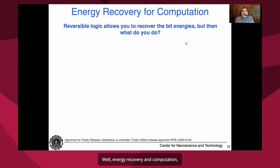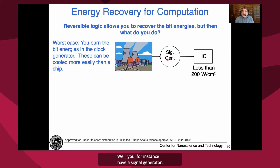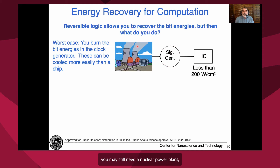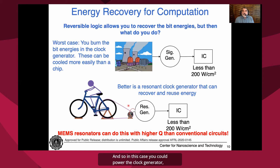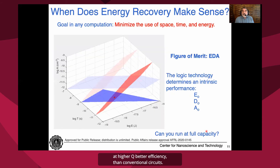Energy recovery and computation can be done with reversible logic — you recover the bit energies, and then what do you do with them? You could have a signal generator that puts bits into the chip and takes them back. With adiabatic reversible logic, you can dissipate less than 200 watts per square centimeter, but if you don't recycle the bits in the signal generator, you may still need a nuclear power plant because you'll burn those bits to heat in the signal generator. A much better approach is to use a resonant clock generator that can recover, recycle, and reuse the energy used for the bits. In that case, you could power the clock generator with a person on a bicycle generating about 200 watts. MEMS resonators can do this at higher Q and better efficiency than conventional circuits.